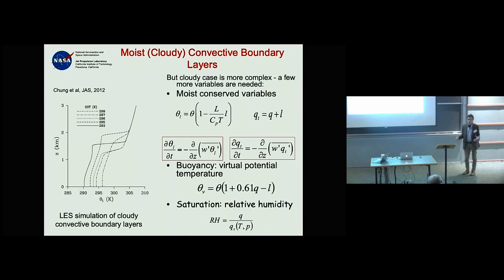When you go to moist convective boundary layers — this shows the evolution over different SSTs of convective boundary layers over the subtropics — and you enter the phase-transition world or mixed phase, you need not only moist conserved variables.